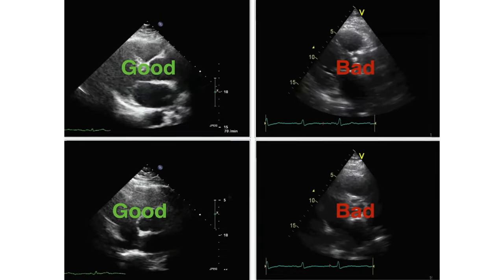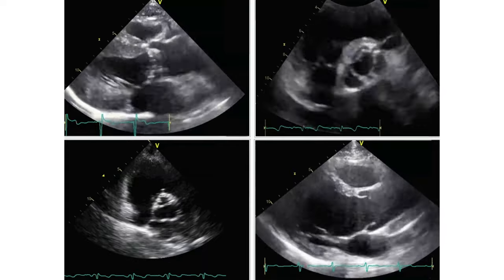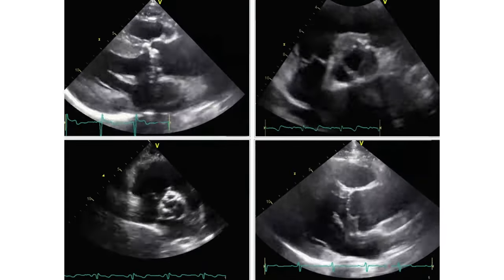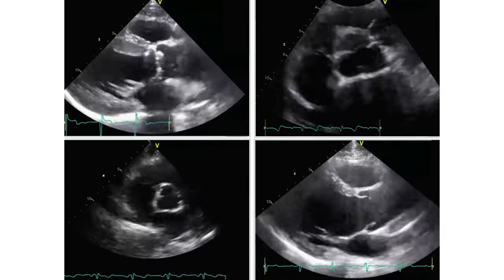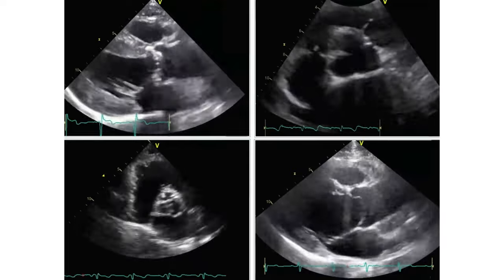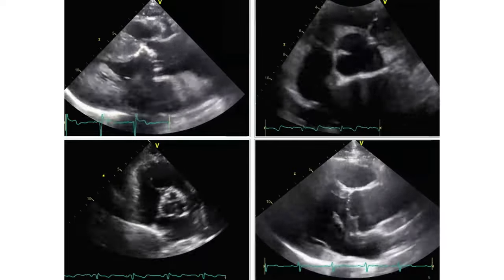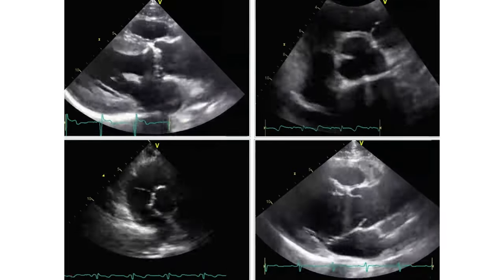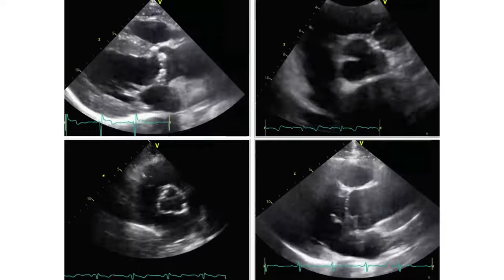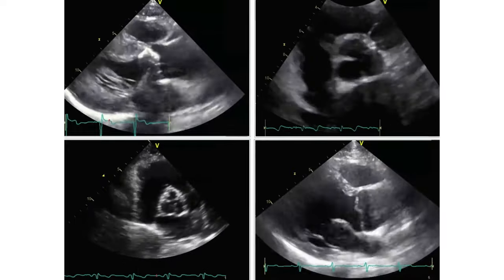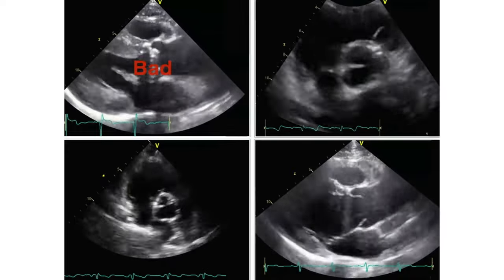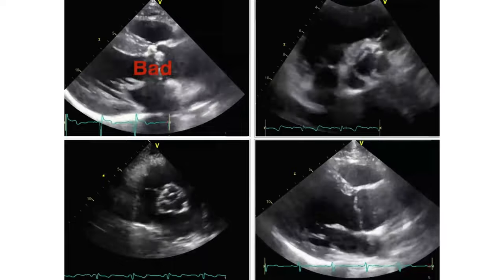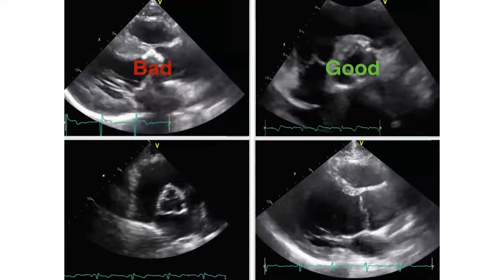And still some other examples for you. Again we have aortic valves, long and short axis. The first one: we see a lot of calcification, we cannot even distinguish the opening — this is a bad valve. Next to it, a good valve.